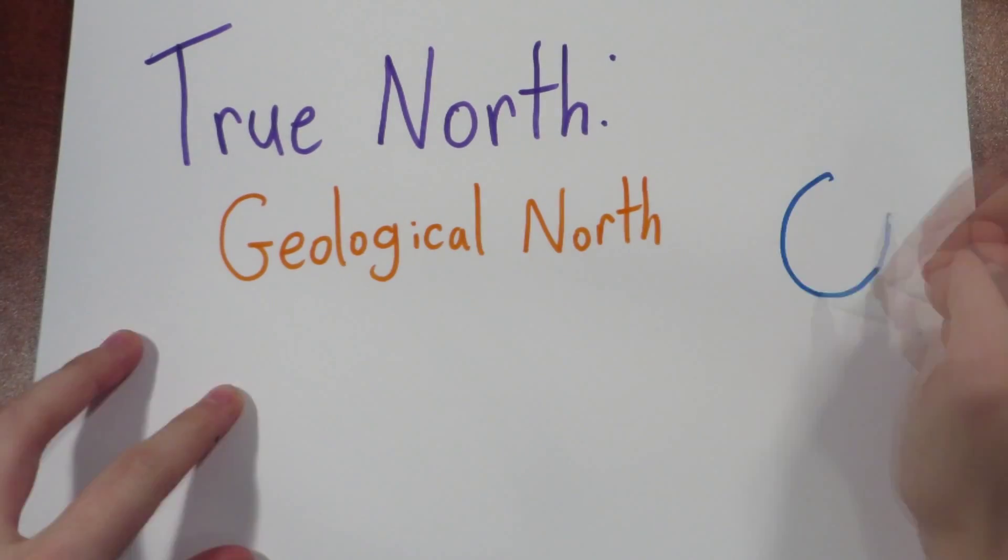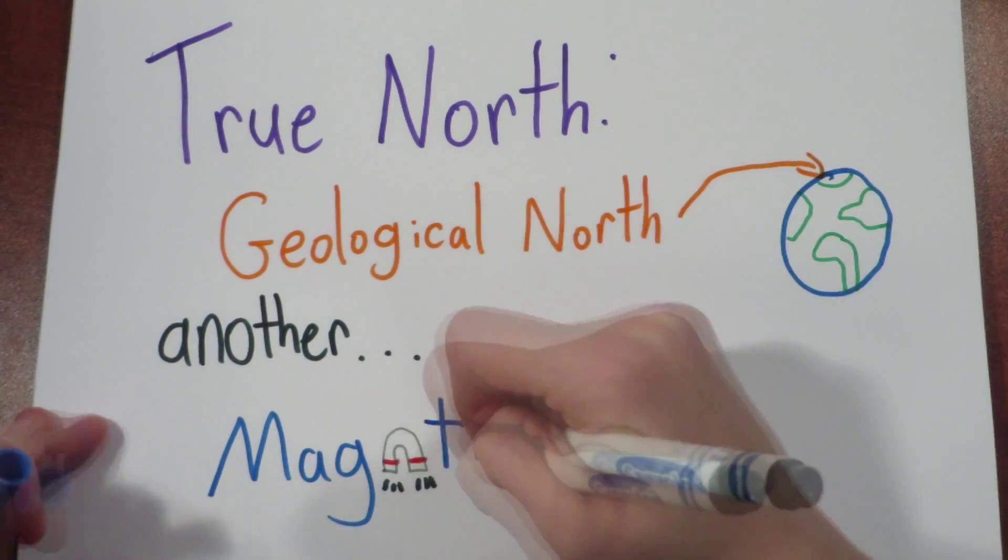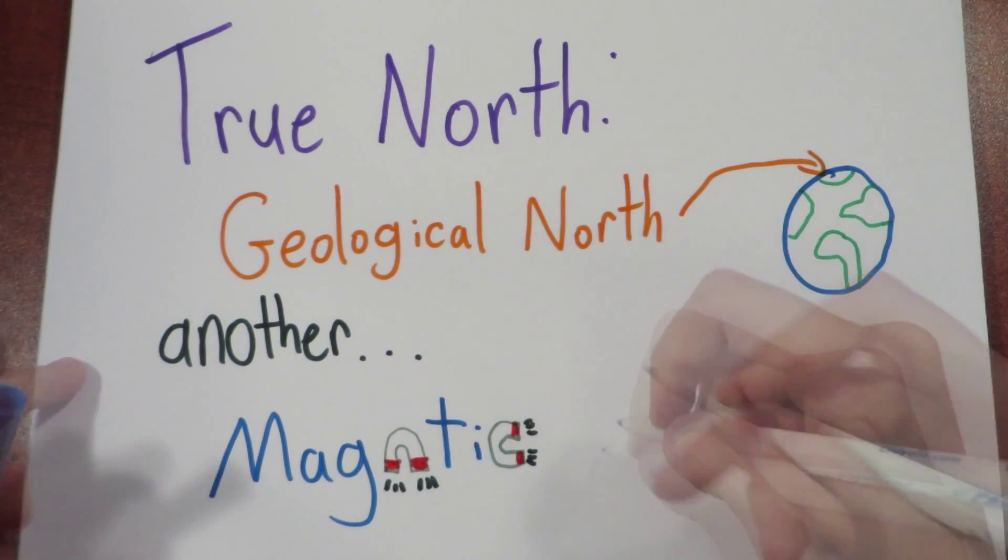So to wrap things up, the geological north is what we know as true north. However, there still is another north, which is the magnetic north, which is really located in the geographical south.